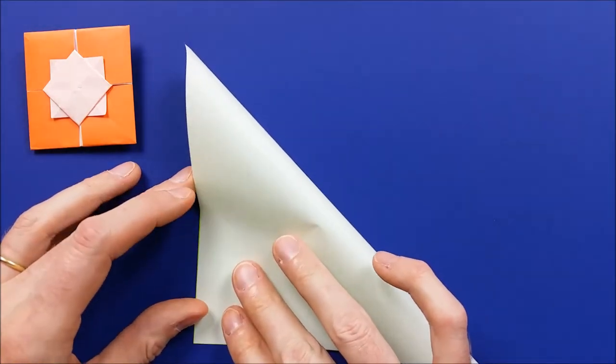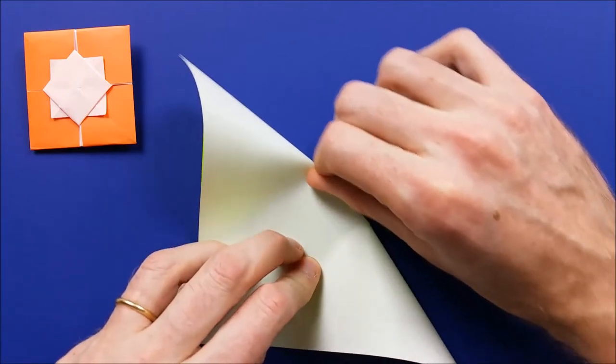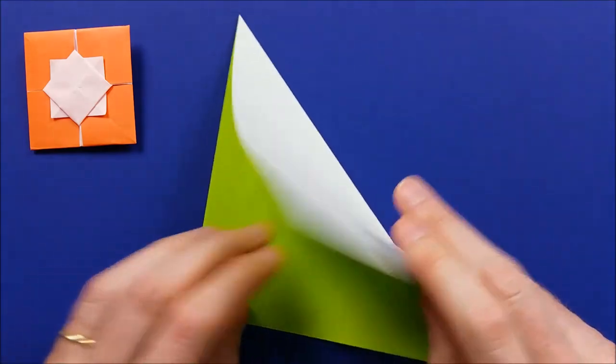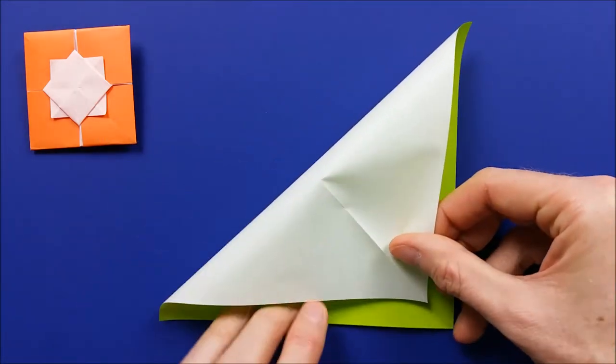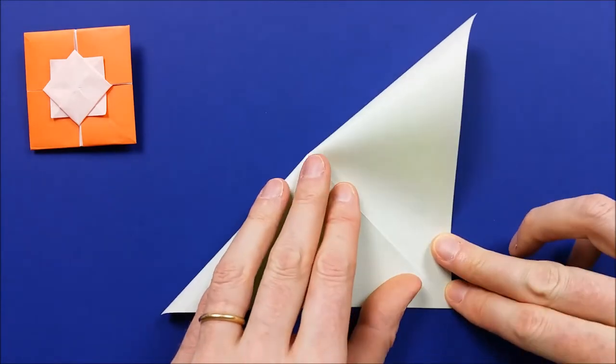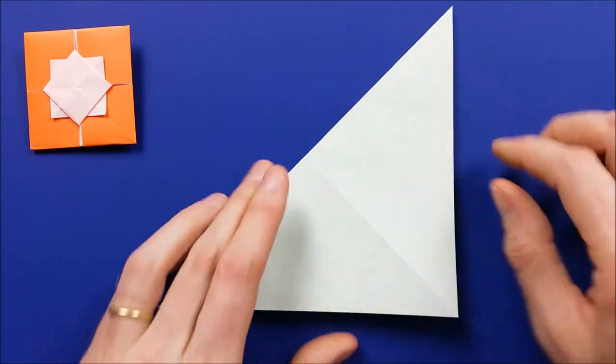First, fold the square along one diagonal. Mark the fold and unfold. Then fold the other diagonal. Mark the fold and unfold.